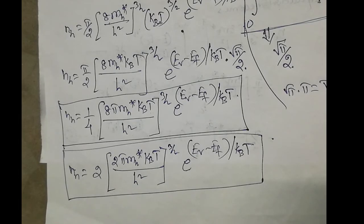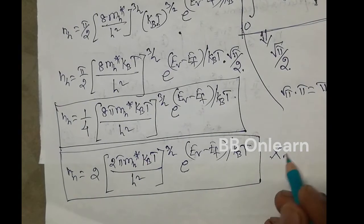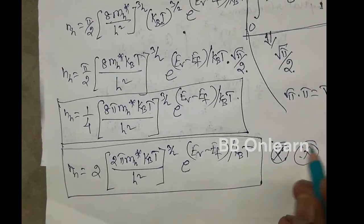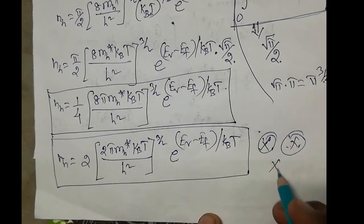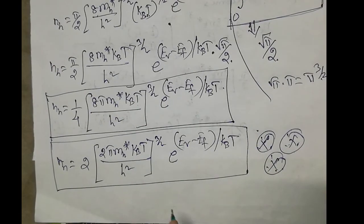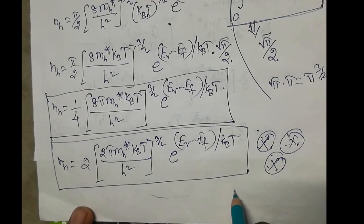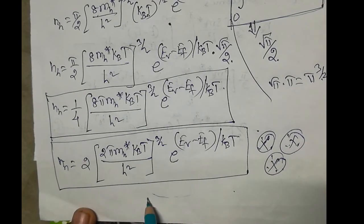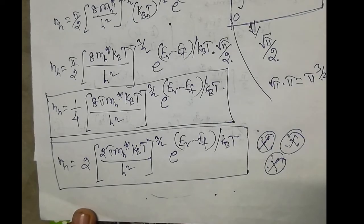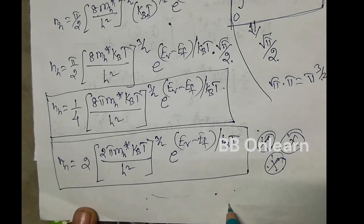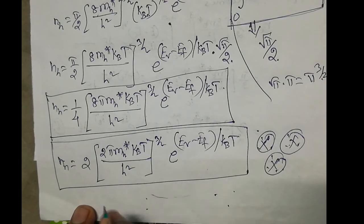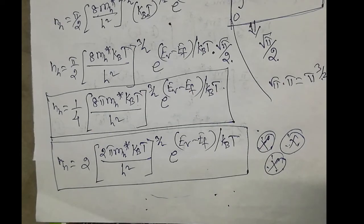Students, this question is very important — it is a 16-mark question. We already covered the density of electrons in the conduction band in the previous class, and now we have covered the density of holes in the valence band.